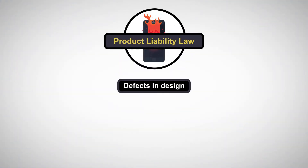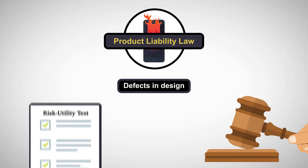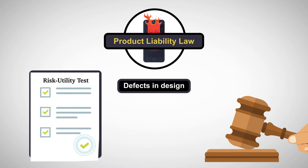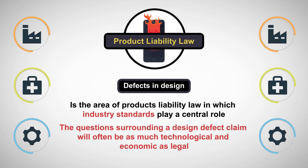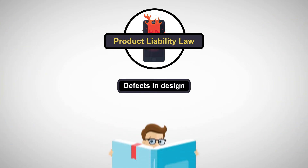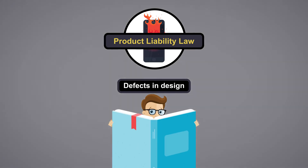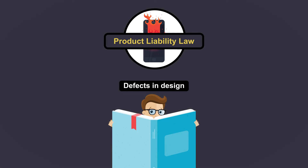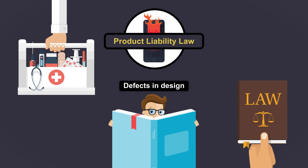When facing a claim for product defect, courts will be guided by the legal principles we have presented here, with the risk utility test as the prevalent standard. However, design defects is the area of products liability law in which industry standards plays a central role. The questions before a court dealing with a design defect claim will often be as much technological and economic as legal. Legal professionals who regularly deal with products liability and design defects should endeavor to keep up with industry developments and pay close attention to the latest medical trends as well as legal decisions to be up-to-date in this fast-changing field.